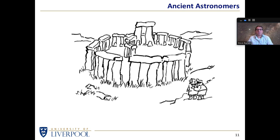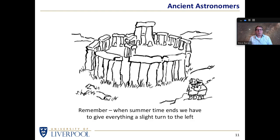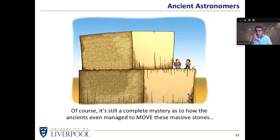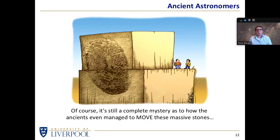And of course we have objects like Stonehenge - huge stone circles made into a ring or multiple rings and alignment stones. Is it a clock? Is it a calendar? Is it something else? Here we see one of the architects talking to the other, saying: 'Remember, although we've built this thing, when summertime ends we have to give everything a slight turn to the left.' And when it comes to thinking about how these stones were moved, Patrick may answer, 'We just don't know.' But the hint is given by something these two individuals are missing - there's the clue that tells you how these massive stones were actually moved.